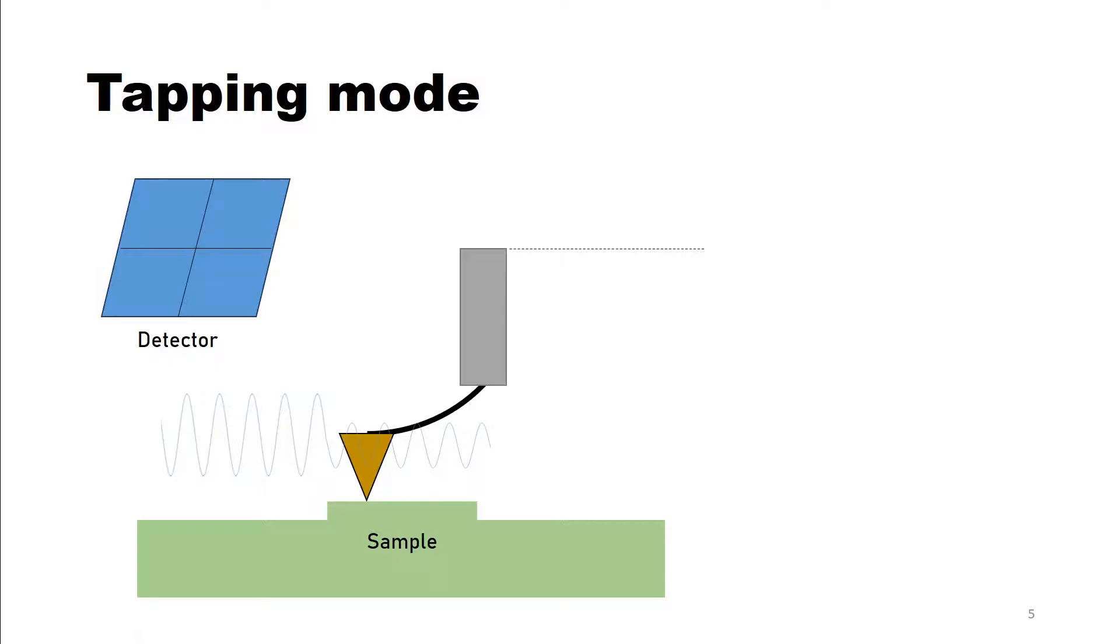If a change in amplitude is detected the height of the z-stage is adjusted and from that a topographical image is produced. This mode is especially suitable for biological samples that would be easily damaged in contact mode.